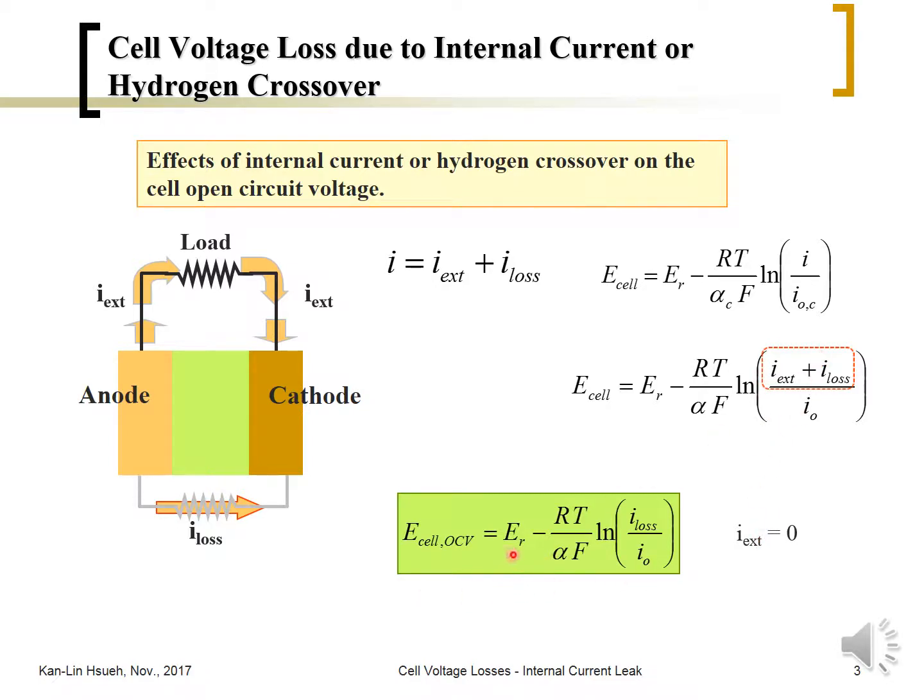From this equation, if we assume I_EXT equals zero, then we end up with this term. If there's no internal leakage current, then OCV equals the reversible potential or equilibrium voltage. But because there's some leakage, the OCV is less than it's supposed to be.